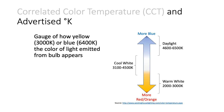To give you a visual: daylight has approximately 4600 to 6500K values, so if you buy a light bulb in this range it's considered daylight. A bulb between 3100 to 4500K is considered cool white. An even lower K value, such as 2000 to 3000K, is considered warm white and the light is generally more yellowish in color.